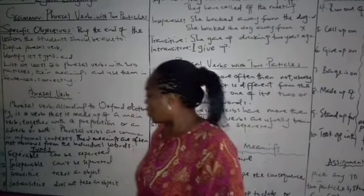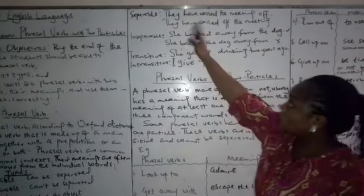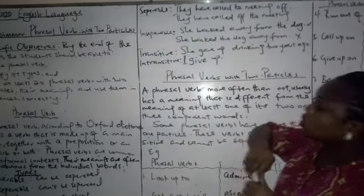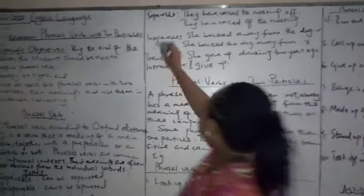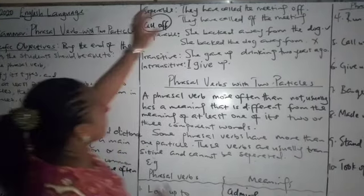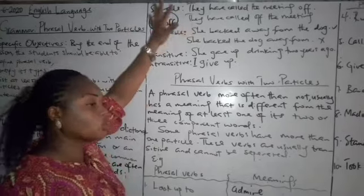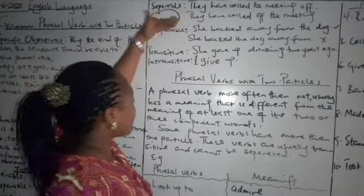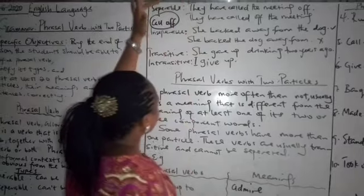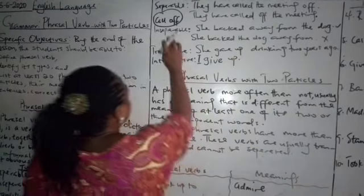We have four types. We have the separable one, the inseparable one, the transitive and the intransitive phrasal verb. What is the separable phrasal verb? It means that it can be separated. An example is they have called the meeting up. The first verb we have here is called up. In the first sentence, you have called here and then up here. It means that you can separate this, depending on the usage. You can separate this. Look at it here together. They have called up the meeting.